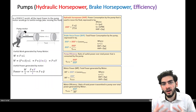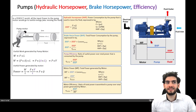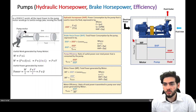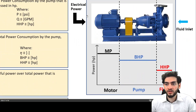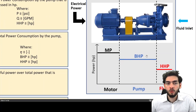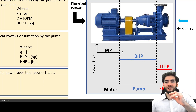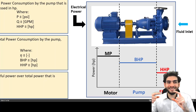These five terms are used in industry, and it is good to be aware of them even if you may not use all of them at work. This diagram is a summary of all the horsepower terms. The pump receives electrical power, which becomes motor power. Motor power transmits energy to the pump as brake horsepower, which is less than motor power due to motor inefficiencies. A portion of the energy received by the pump is then lost to pump losses.